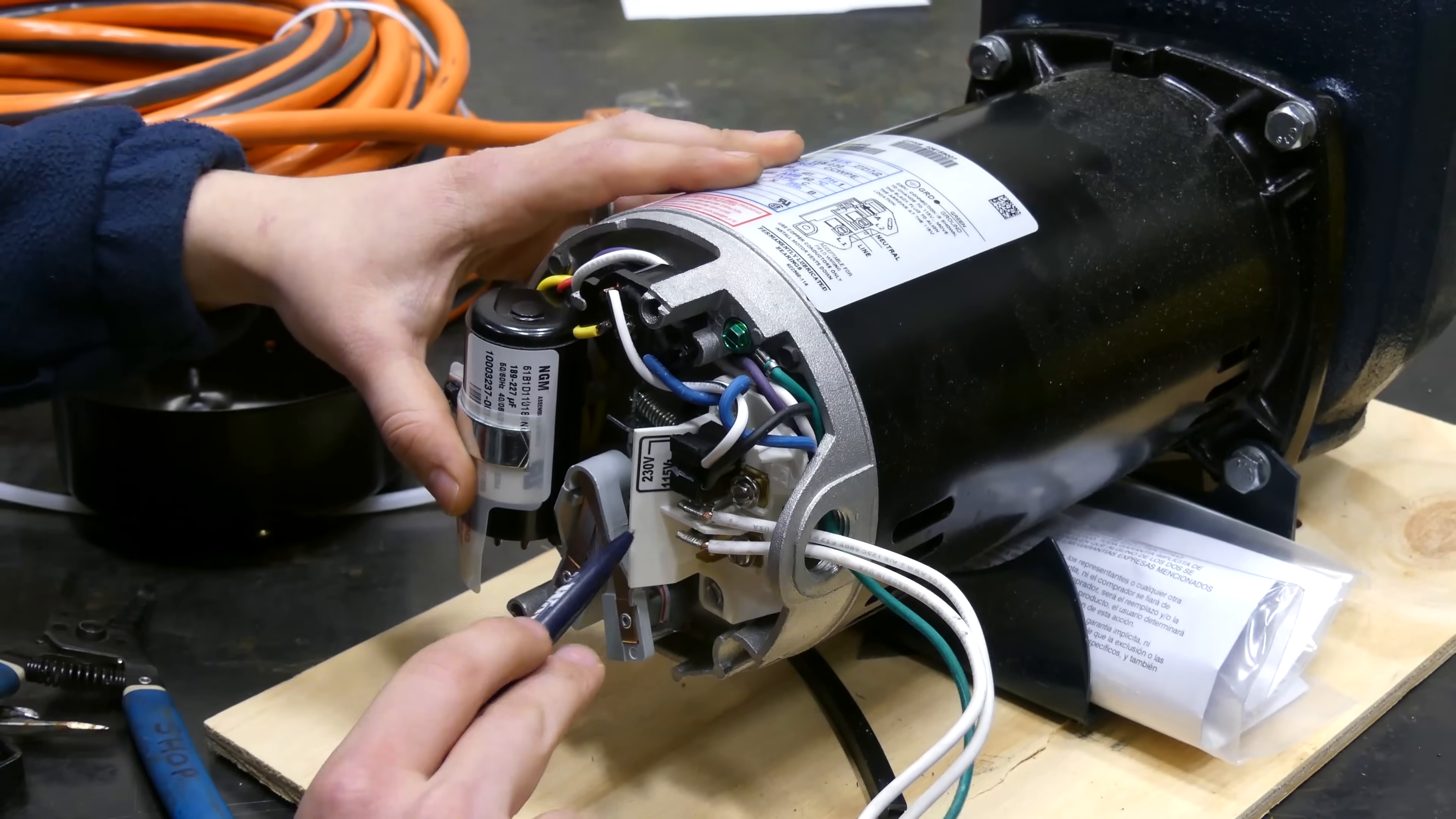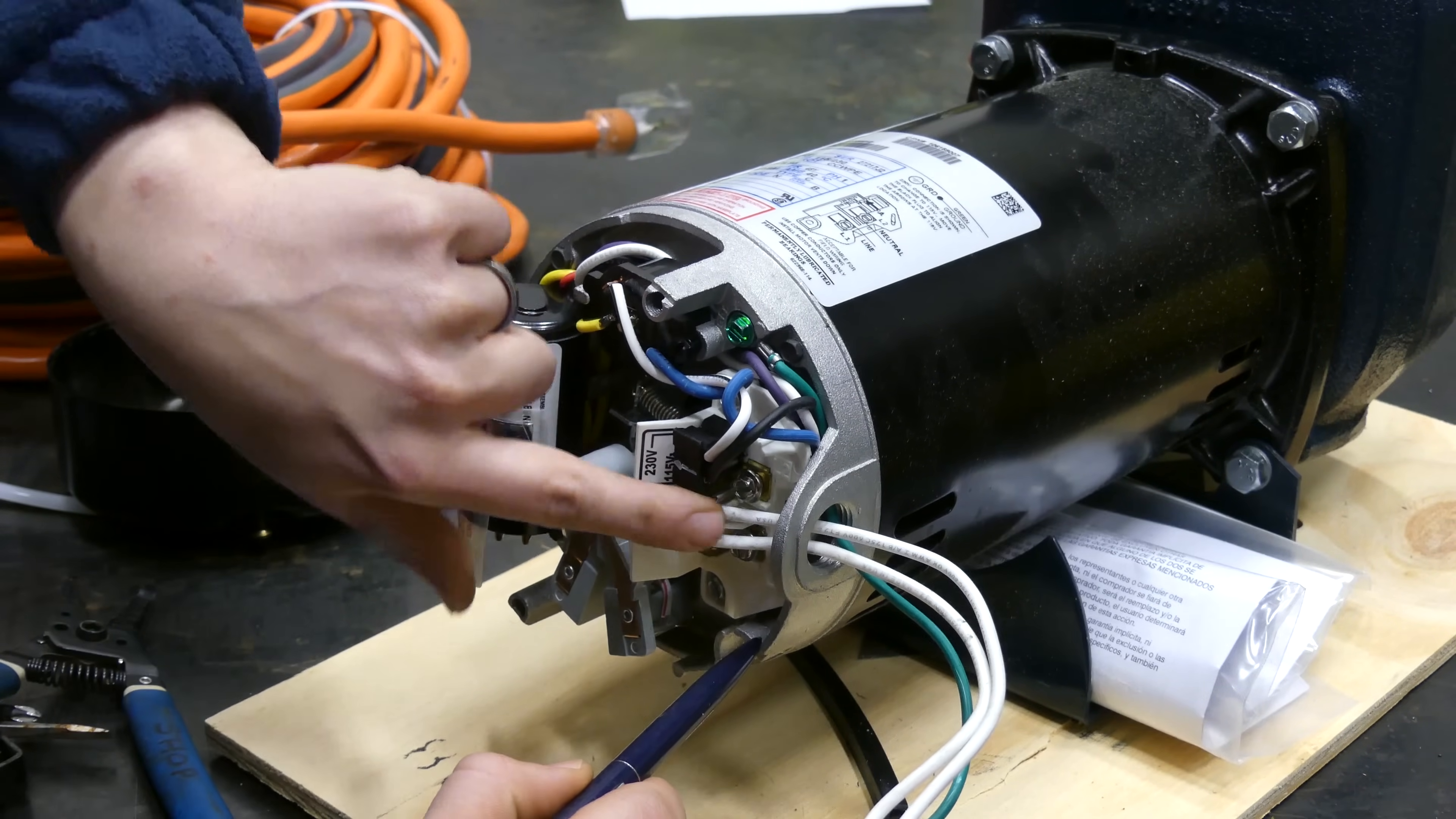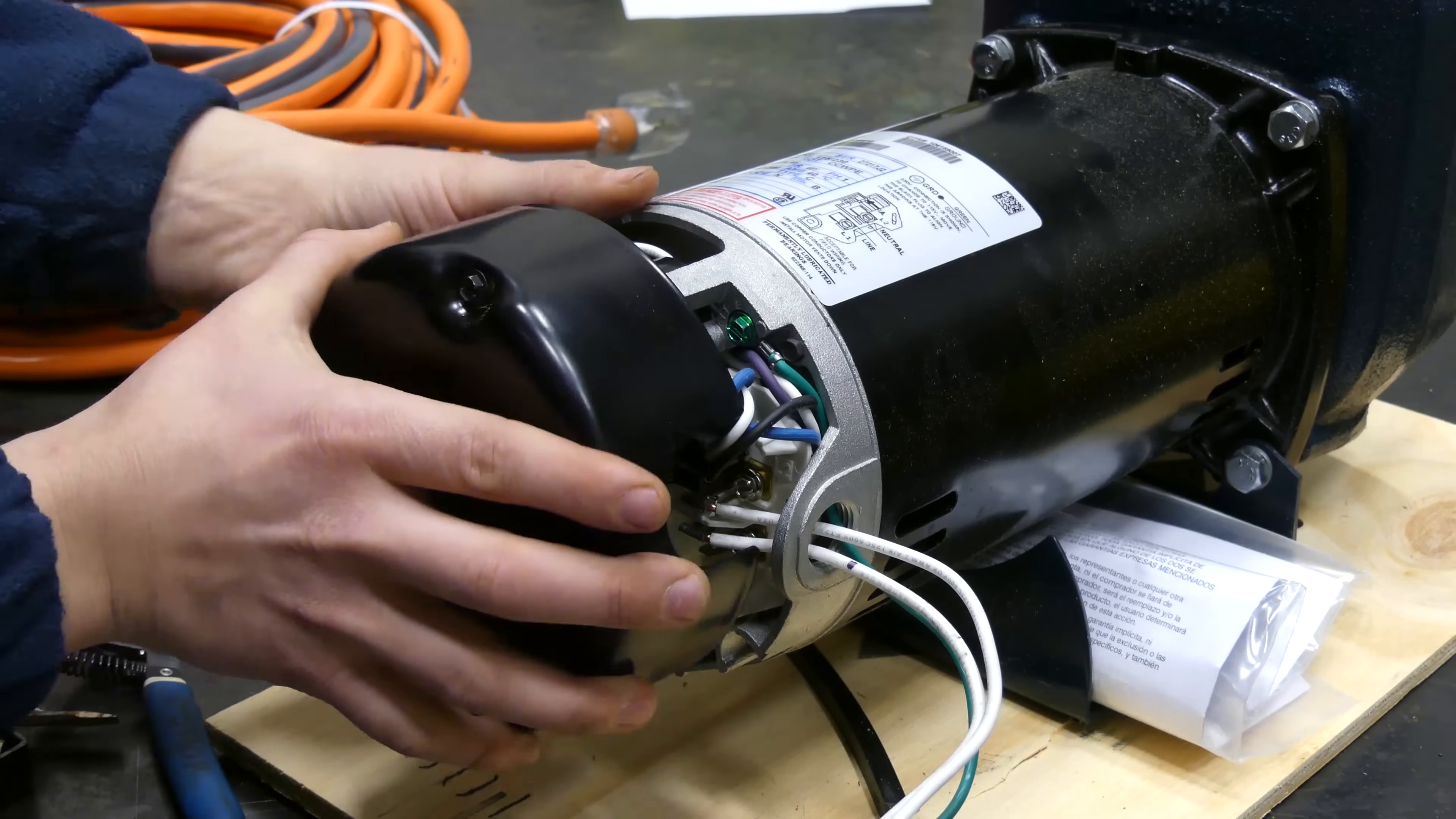Before I throw the back plate on, I do want to just point out one thing here. You want to pay attention, and it's on the motor here, but you want to pay attention to your neutral in 120 volt and your hot leg. There's a diagram on top of the motor that says that L2, which is the top one here, is our neutral, and then L1 is our line one. So I'm just going to mark line one with some black, so I know once I got the back plate on which wire goes where. So now we'll throw this back plate back on here.